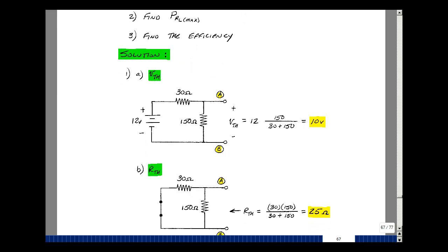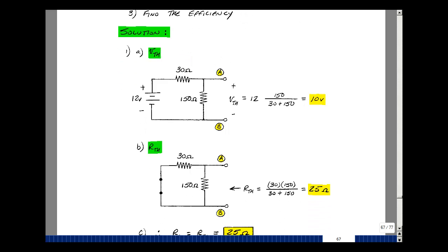I'll set all the independent sources equal to zero, and then look back in terminals A and B. Well, there's only one source here, it's a voltage source, so we short-circuit that, and then look back into the terminals, and we see 30 in parallel with 150. So the product over the sum would give me the value of R-thevenin, and that turns out to be 25 ohms.